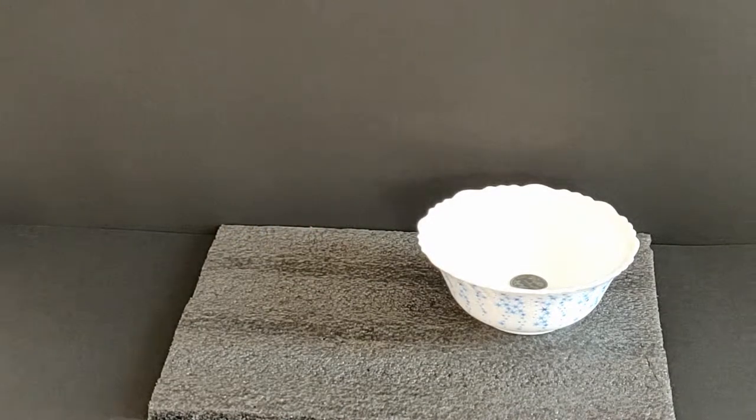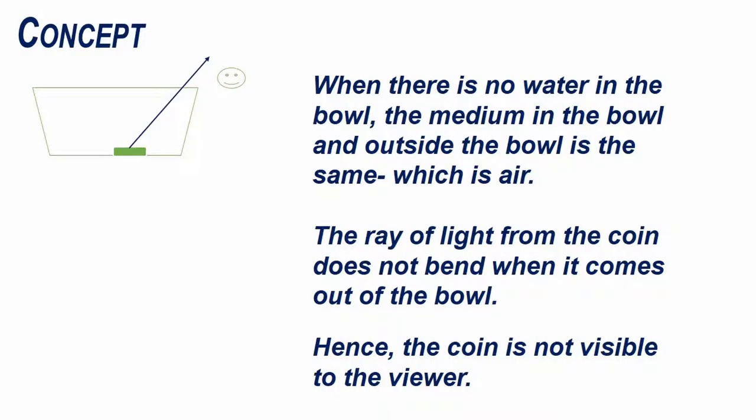How does this happen? In this experiment, the coin gradually reappears as water is poured into the bowl. When there is no water in the bowl, the medium in the bowl and outside the bowl is the same, which is air. Hence, the ray of light from the coin does not bend when it comes out of the bowl. Hence, the coin is not visible to the viewer.